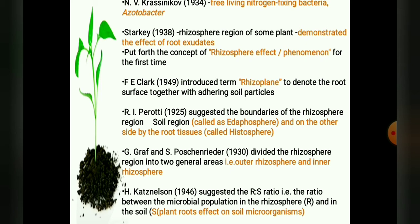In 1930, G. Graff and S. Potion Rider divided the rhizosphere region into two general areas — the outer rhizosphere and the inner rhizosphere — for the purpose of describing the site of microbial action.